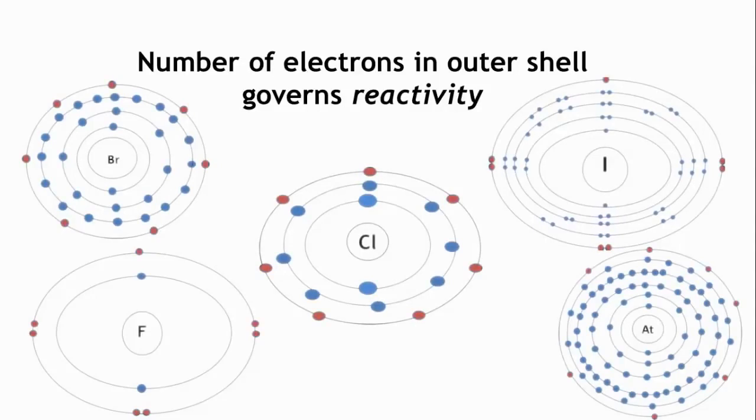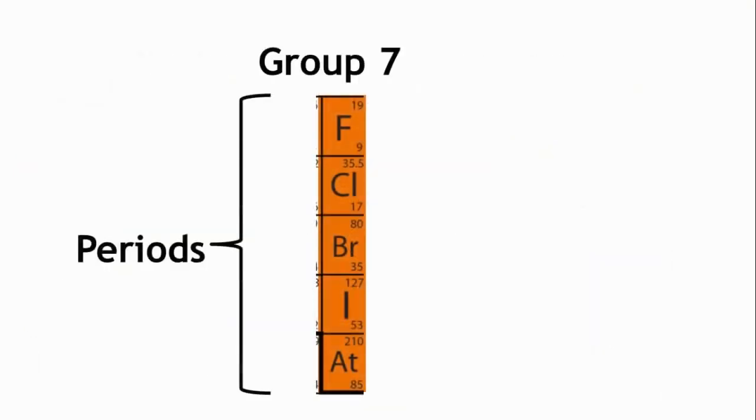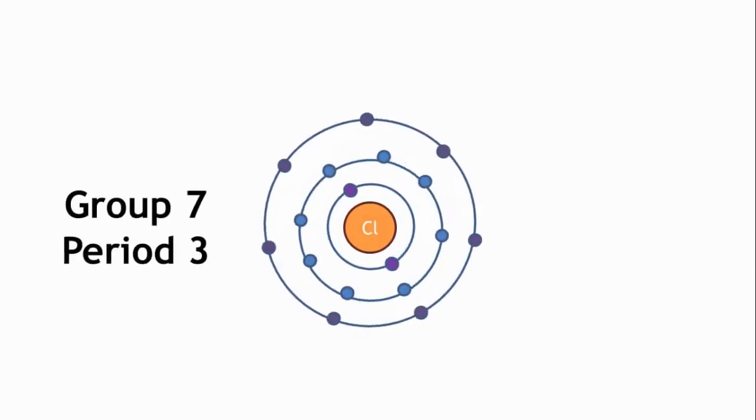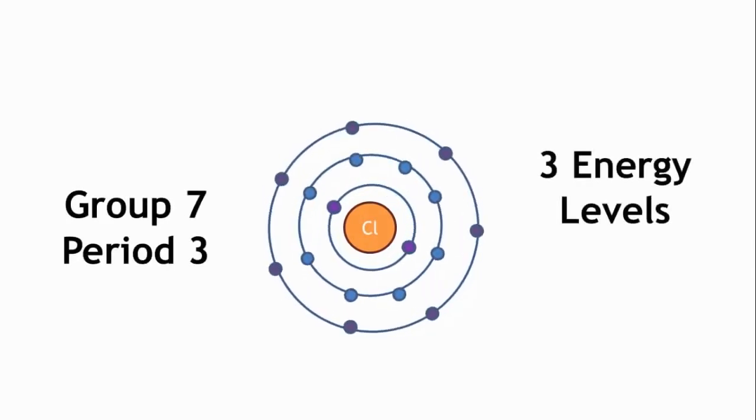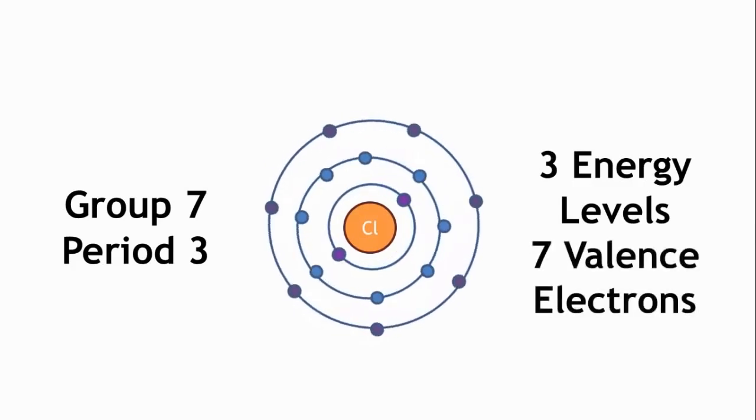The properties show a gradual change going down the group, as we go from period to period. So if we look at group 7 again, we can see that they are each in a different period in the periodic table, telling us that each element in this group has its outer electrons on a different shell. So chlorine is in group 7, period 3. Therefore, it has three energy levels with 7 electrons in its outermost shell.